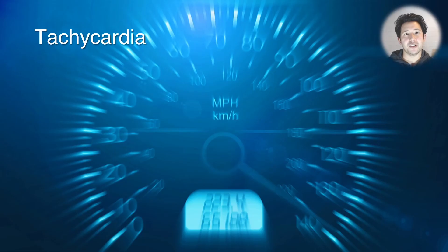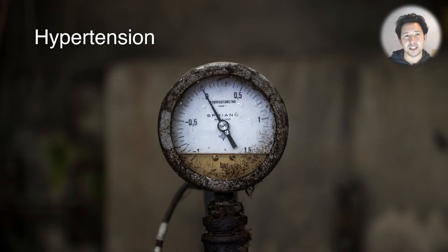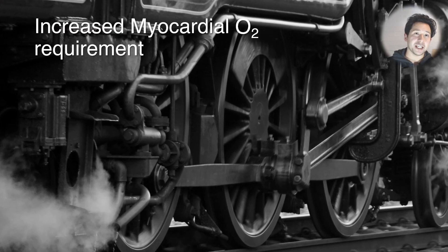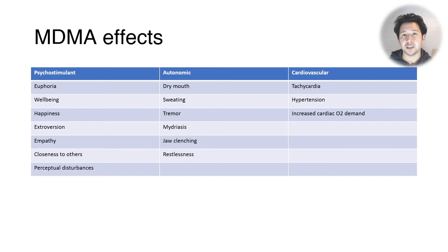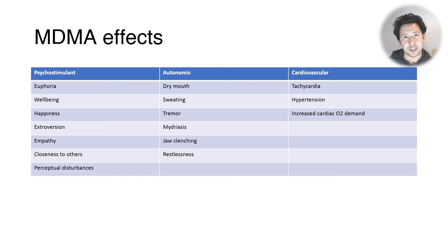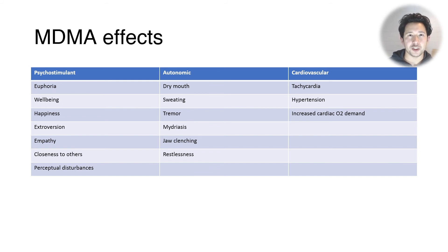The cardiovascular effects are tachycardia, hypertension, and increased myocardial oxygen demand, which isn't usually a problem in healthy subjects but can be a problem if someone has pre-existing heart conditions. Those are the general effects of MDMA — I'll talk about the toxic effects in the next video, but these are the effects even when used recreationally with no complications.